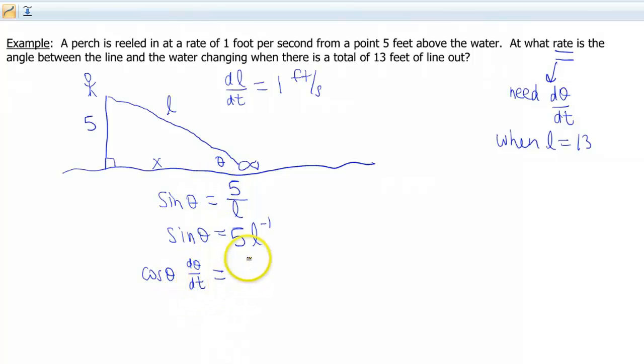So that's where this piece comes from. Now let's do the derivative of this side. So that's gonna be negative 5L to the negative 2. And then again, is the line changing with respect to time? Absolutely. So that's our DL DT.